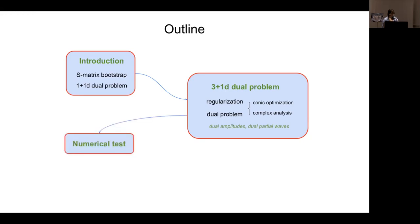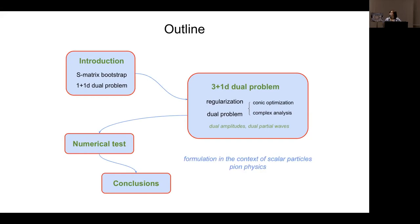I will argue the need for regularization and formulate the dual problem from two perspectives: conic optimization language and complex analysis. During this process I'll introduce the concepts of dual amplitudes and dual partial waves. After that I'll describe some numerical tests and finish with conclusions. I'll work in the context of scalar particle scattering related to pion physics, focusing on the single flavor case for simplicity.